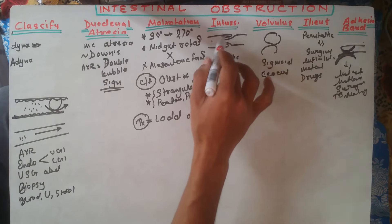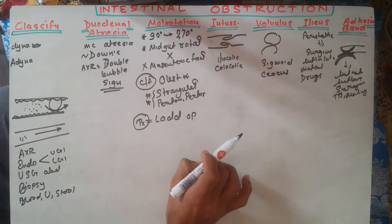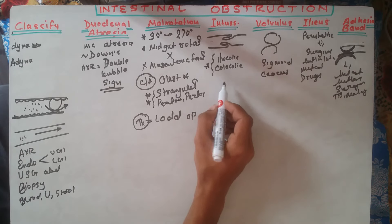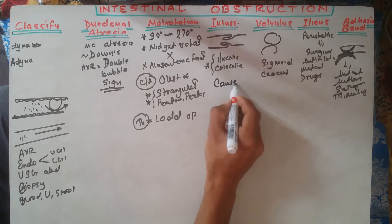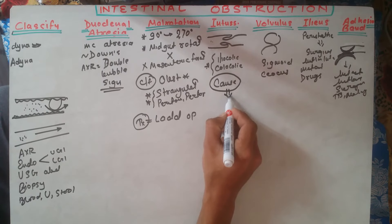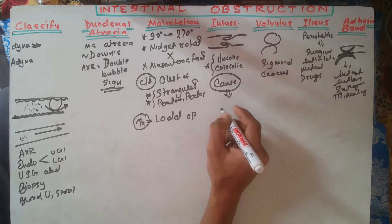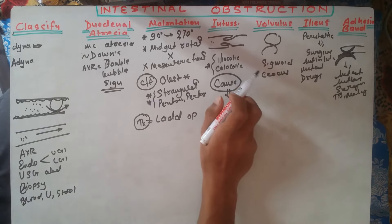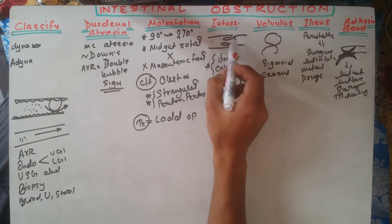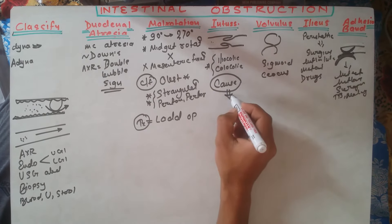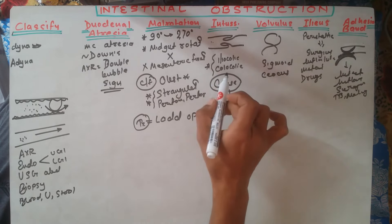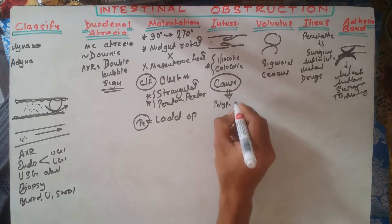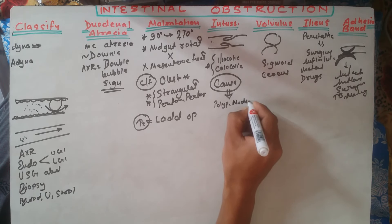Intussusception is intestinal obstruction in which the lumen of the intestine has gone inside another part of the lumen, usually seen at the ileocolic and colonocolic regions. The key concept is that intussusception usually occurs secondary to another cause of intestinal obstruction — some other cause is present in the lumen that leads to intussusception.